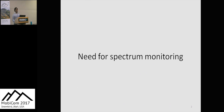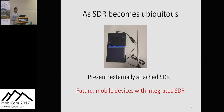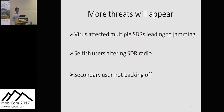First let me motivate you regarding the need for spectrum monitoring. We all know that SDRs are becoming very common. In fact, we envision that in the near future our mobile devices will come with integrated SDRs, and as it happens, various threats will appear. For example, there could be virus-affected SDRs leading to a jamming scenario, cases of selfish users altering their radio settings for using off-limit bands, or secondary users not backing off in presence of the primary user.